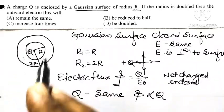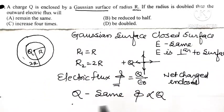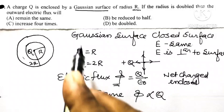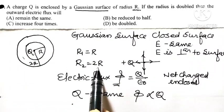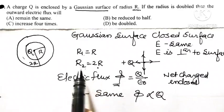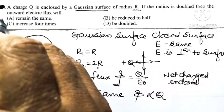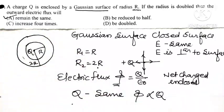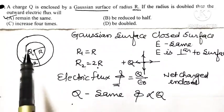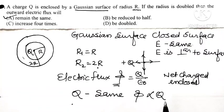The flux associated with a sphere of radius R and the flux associated with a sphere of radius 2R — in both cases the outward flux is the same. So option A, that outward electric flux will remain the same, is the correct option. Always remember that flux associated with a closed surface depends only on the charge enclosed by it and not on the volume or area of the surface enclosing that charge.